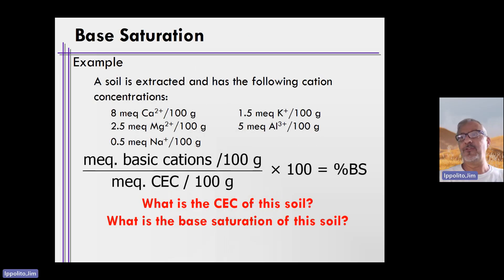Let's do a simple example. Let's say either the testing lab provided you these values that you see on the screen, or you calculated those, and you learn how to calculate these values in the previous video when we were determining CEC. A soil is extracted, and it has these concentrations in milliequivalents per 100 grams of calcium, magnesium, sodium, potassium, and aluminum. So what is the CEC of the soil, and what's the base saturation of the soil?